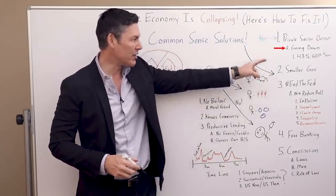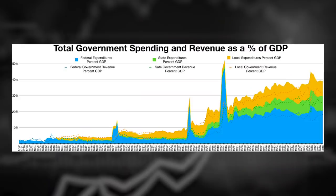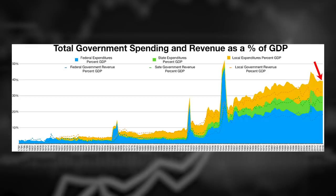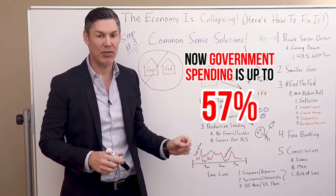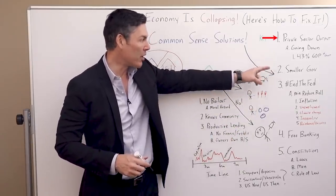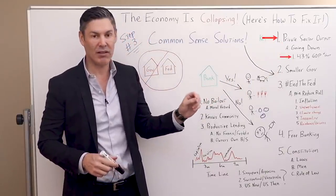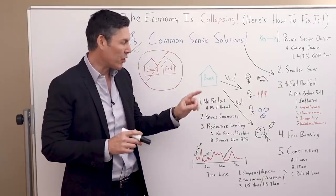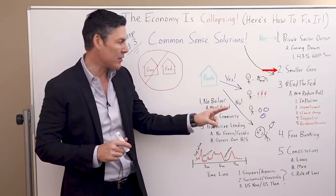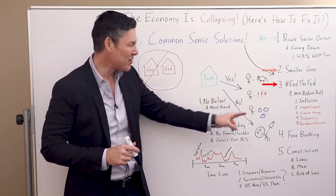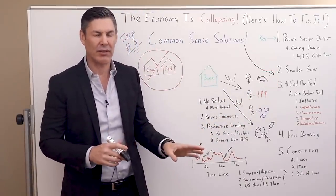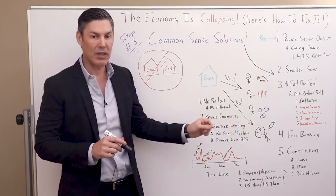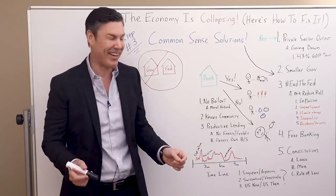Prior to the COVID crisis, government spending was about 40% of GDP. According to my calculations now, government spending is up to 57% of GDP — in other words, the private sector output has gone down to 43%. Currently, government spending makes up the majority of GDP. So how do we fix this? The first thing we can do is decrease the size of government and end the Fed. I know a lot of you say that's totally unrealistic — okay, fine. At least reduce the role of the Fed to a minimum, what it was supposed to be when it was set up. Just backstop the banks, be the lender of last resort, and fight inflation. Make sure we have a strong, stable, sound currency.